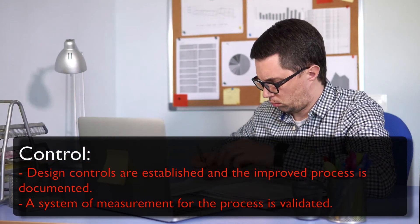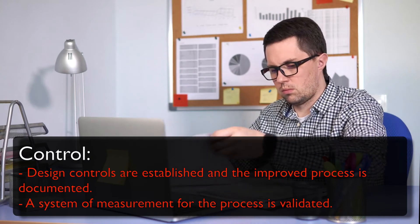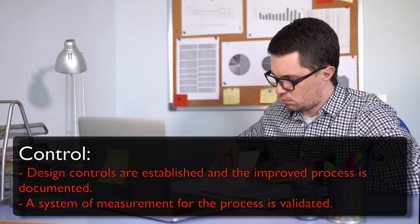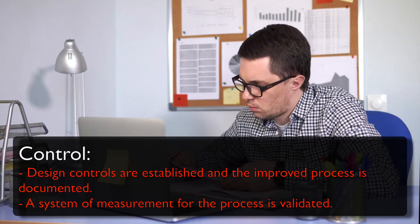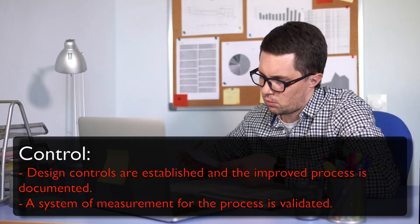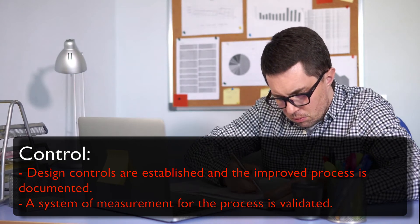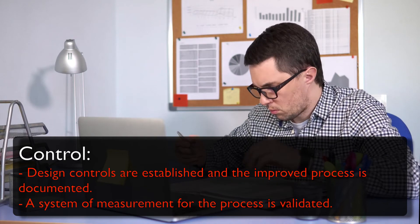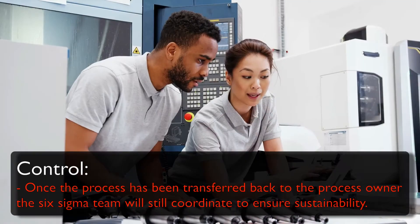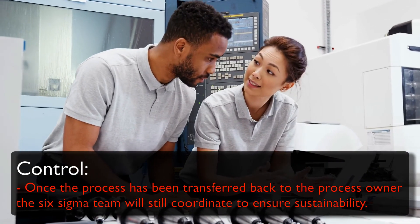In this final control stage, various design controls are established and the improved process is documented. A system of measurement for the process is validated to plan for future improvements. Another critical part of the control phase is the transfer or release of responsibility from the Six Sigma project team back to the business or appropriate department. Once the process has been transferred back to the appropriate process owner, the Six Sigma team will still coordinate with the process owner to ensure sustainability of the project.